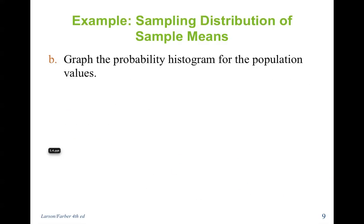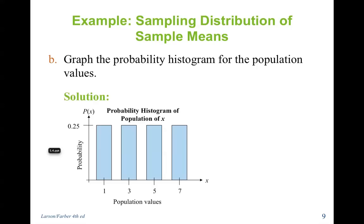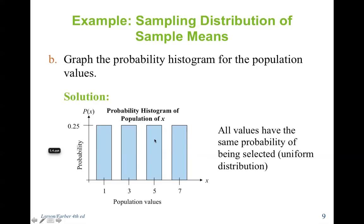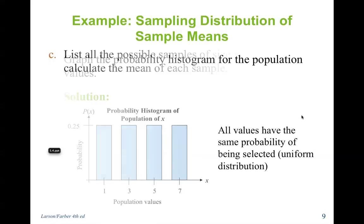Graph the probability histogram for the population values. You can see that this is a uniform distribution — all the values have the exact same probability of being selected: 1, 3, 5, or 7 each have a 1 out of 4 probability of being selected. No one value has a higher probability than the others.